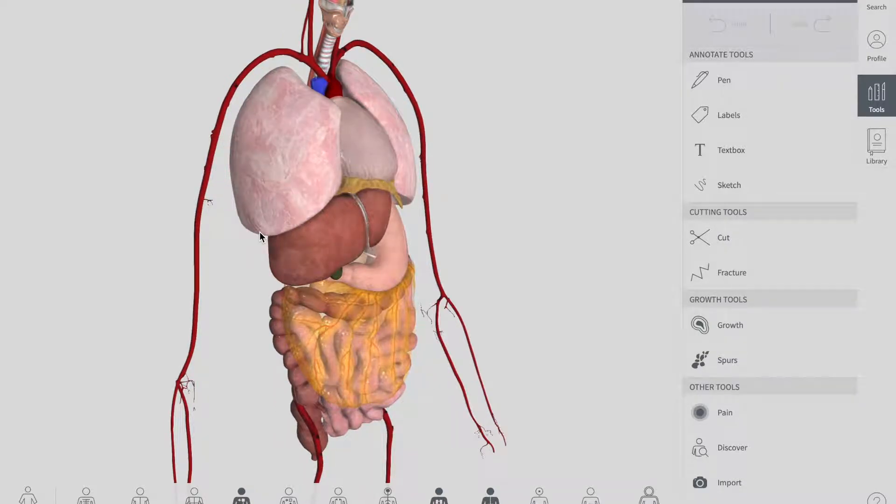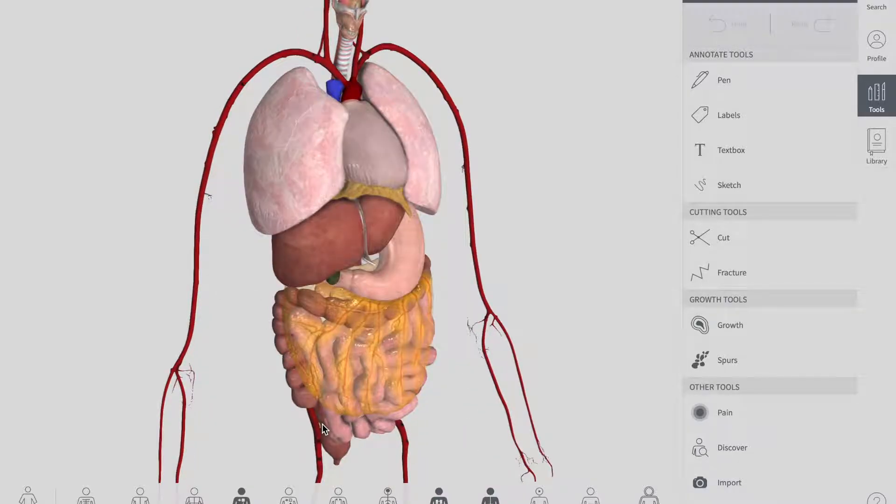I'll talk about the vasculature supply of the esophagus. Remember that we have divided the esophagus into two parts: the thoracic region and the abdominal region.